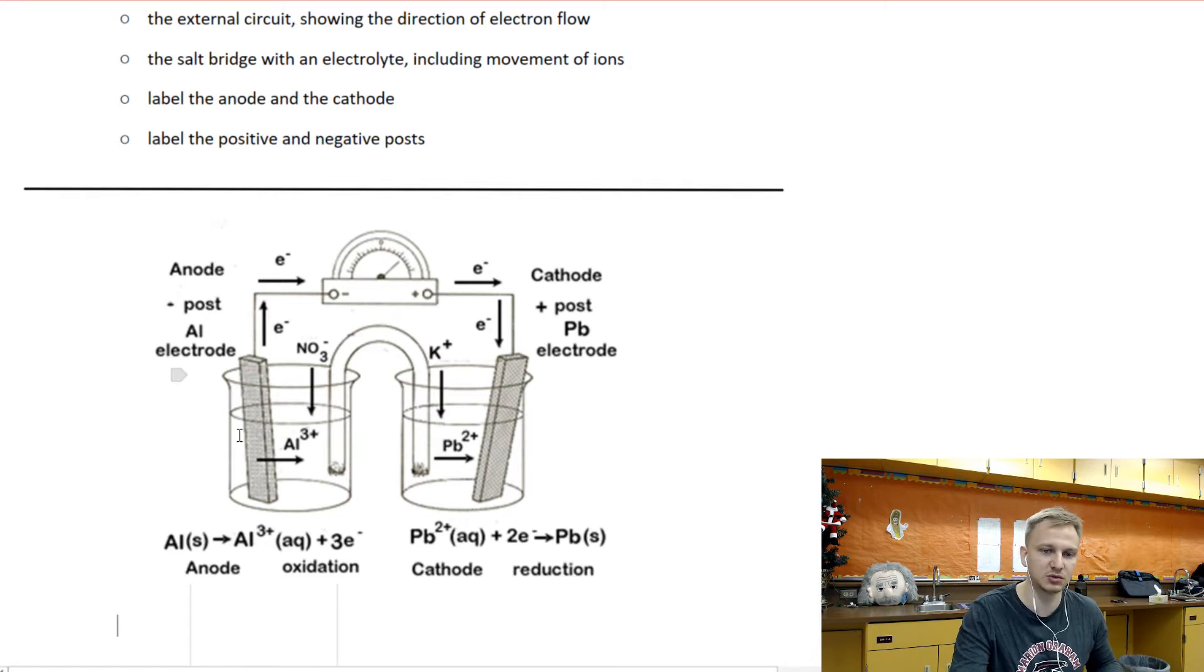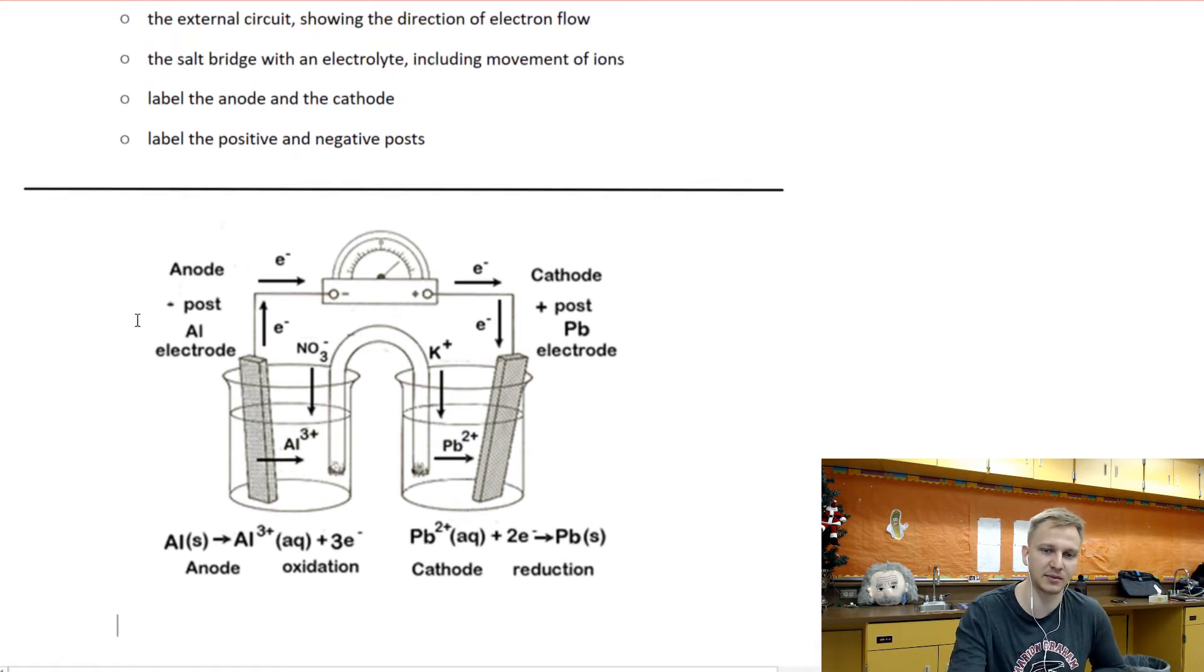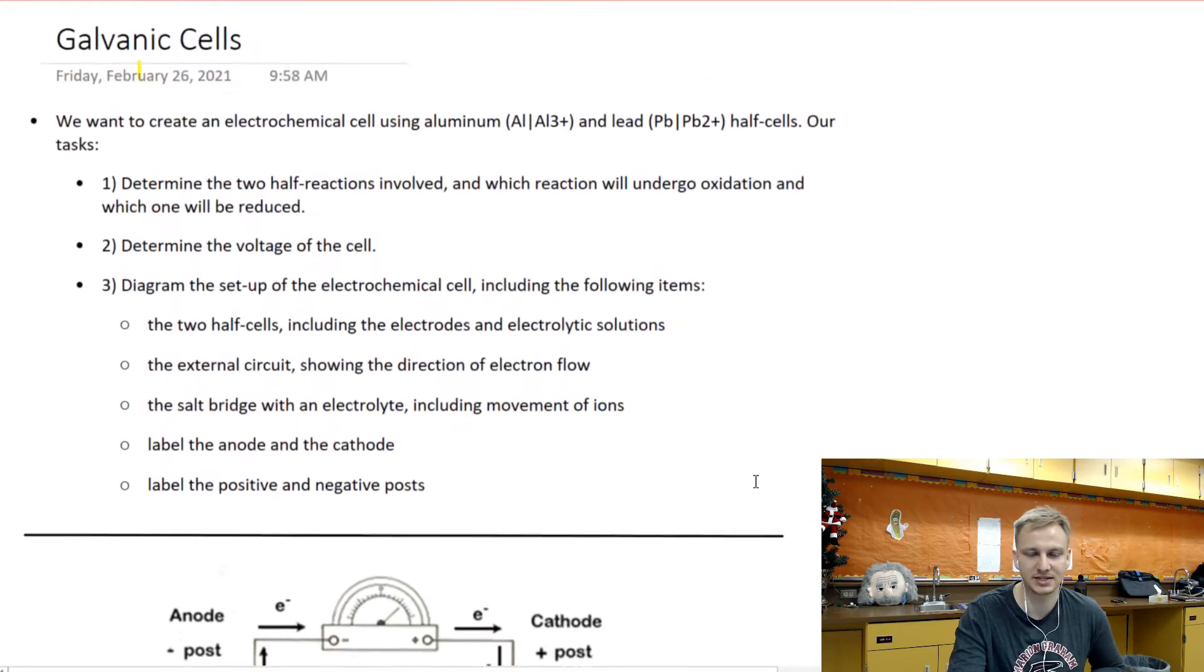So what we'll have is two strips of metal placed in beakers. Those beakers usually contain some sort of sulfide or some sort of nitrate solution, something very soluble, and what we'll have is the movement of electrons from one of the things to the other. We'll attach an anode cathode to that and either a voltmeter or something to track how quickly those electrons are being moved around. You can think of this sort of like a battery.